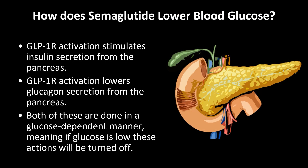Let's briefly go over how semaglutide lowers glucose. Activation of GLP-1 receptors in the pancreas increases insulin release and decreases glucagon release. These both increase glucose removal from the blood. Perhaps one of the more interesting things about semaglutide is that if your glucose is low to normal, insulin release will not be stimulated by the drug. This means there's a very low risk of getting low blood sugar with this drug if it's used alone, compared to something like insulin.